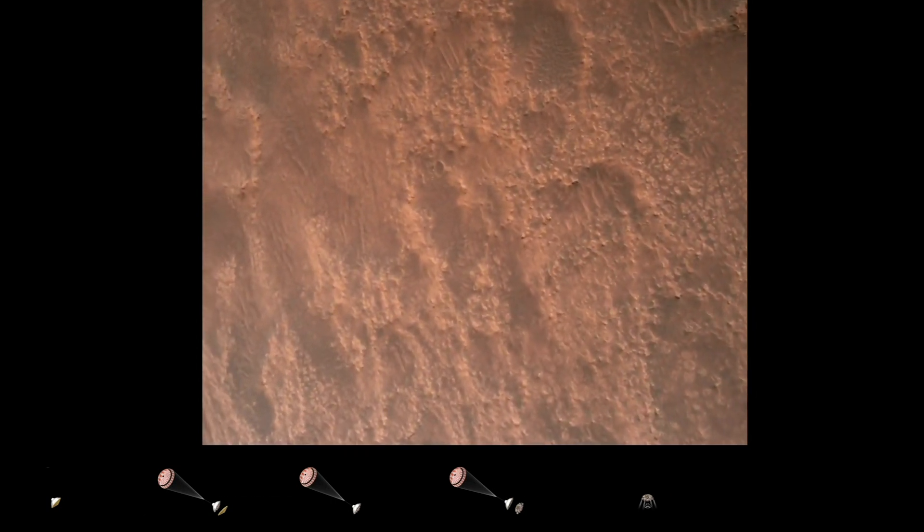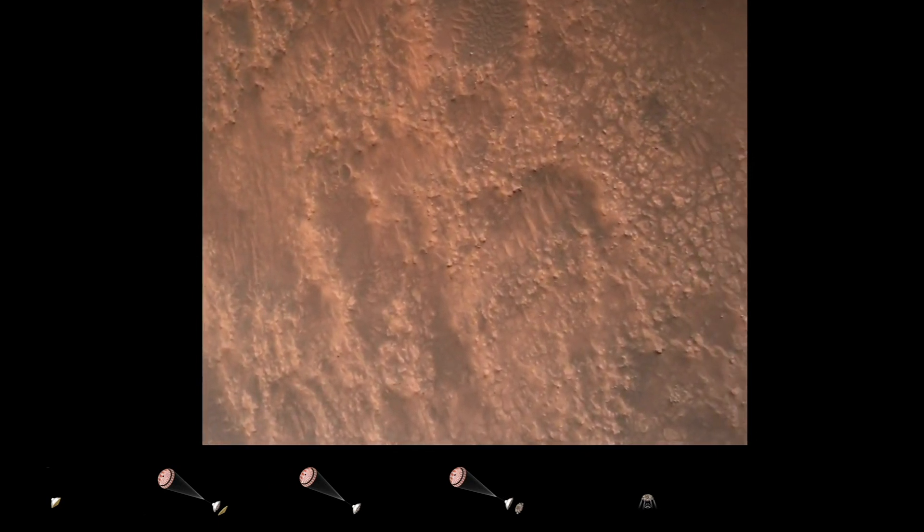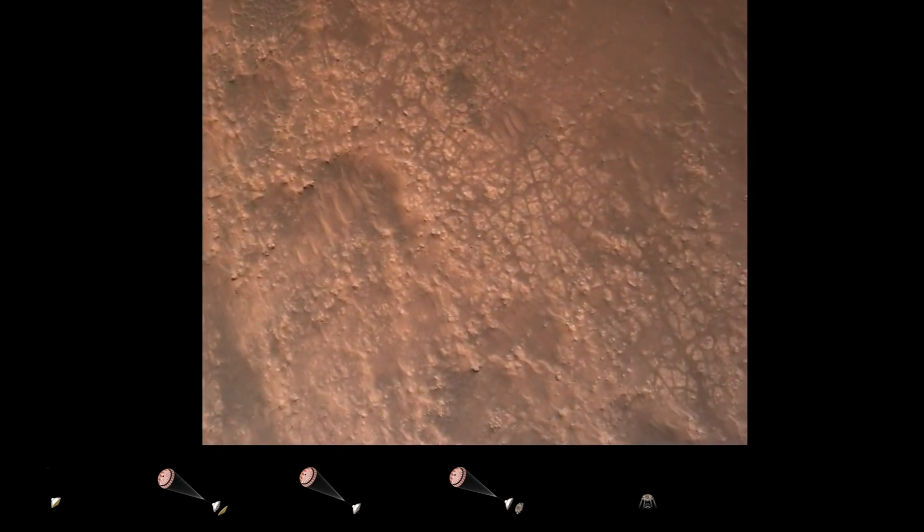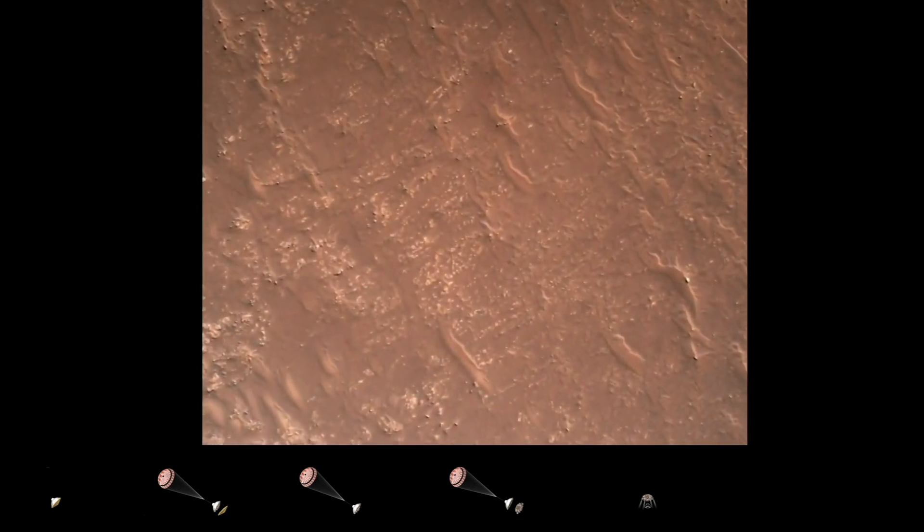Here in safety, bravo. We have completed our terrain relative navigation. Current speed is about 30 meters per second, altitude of about 300 meters off the surface of Mars.